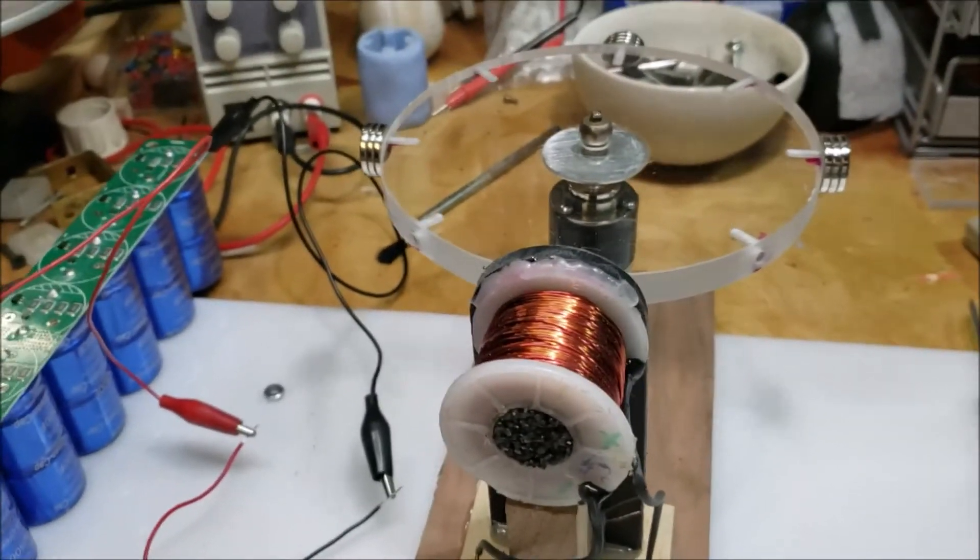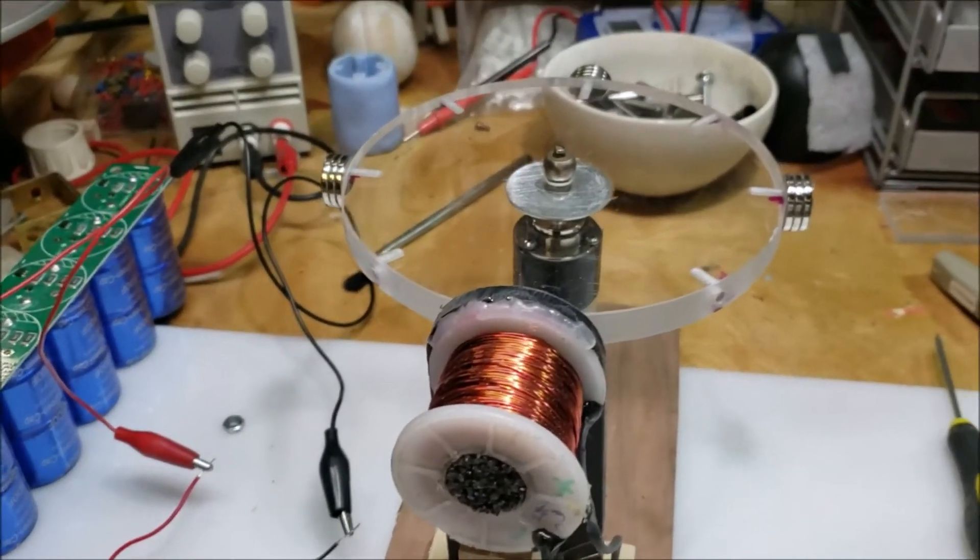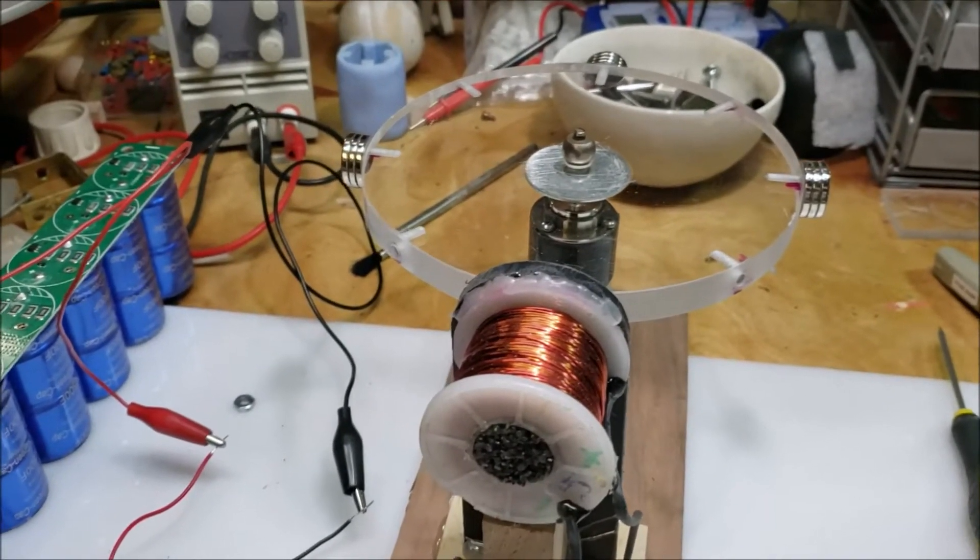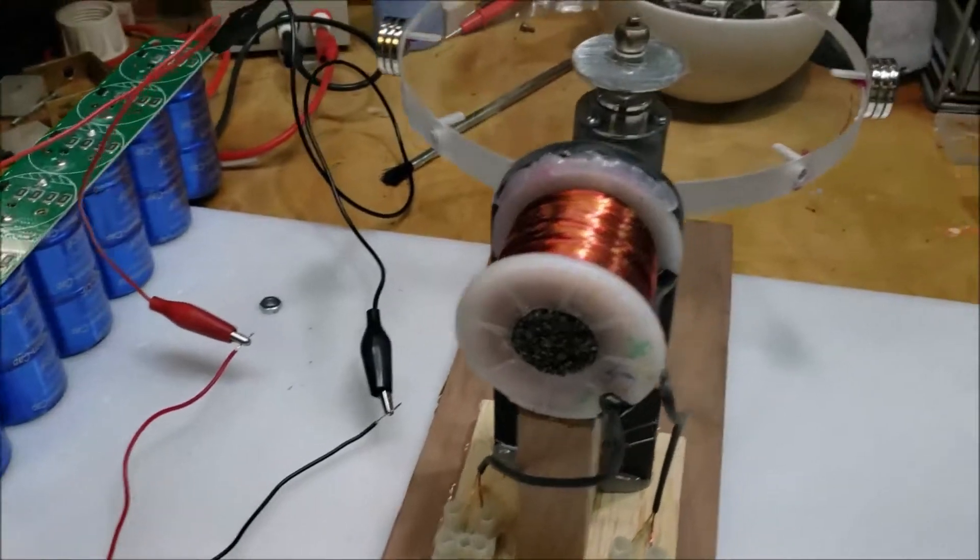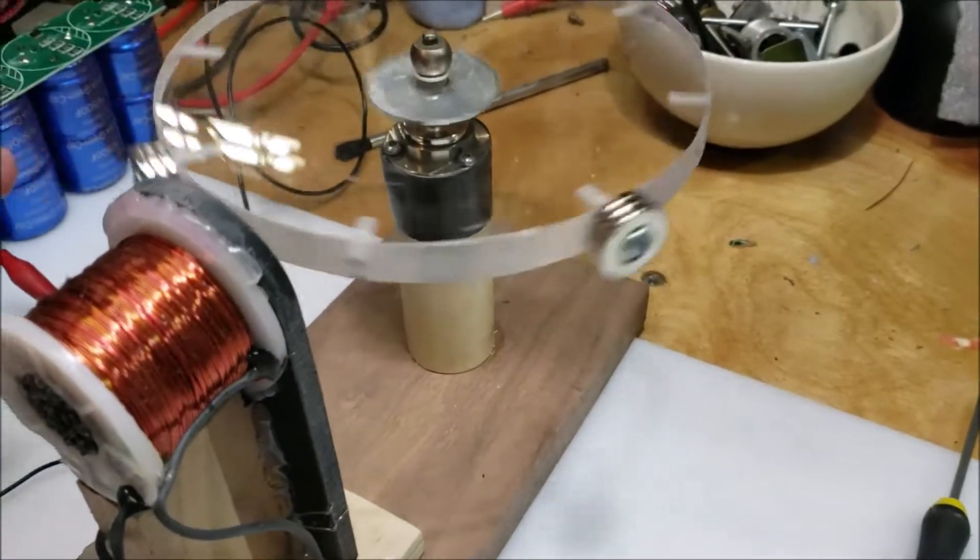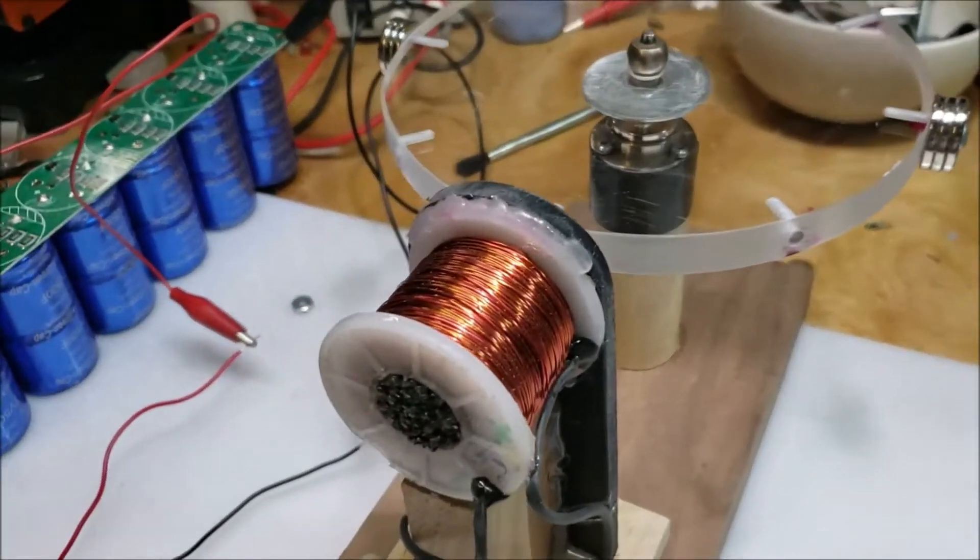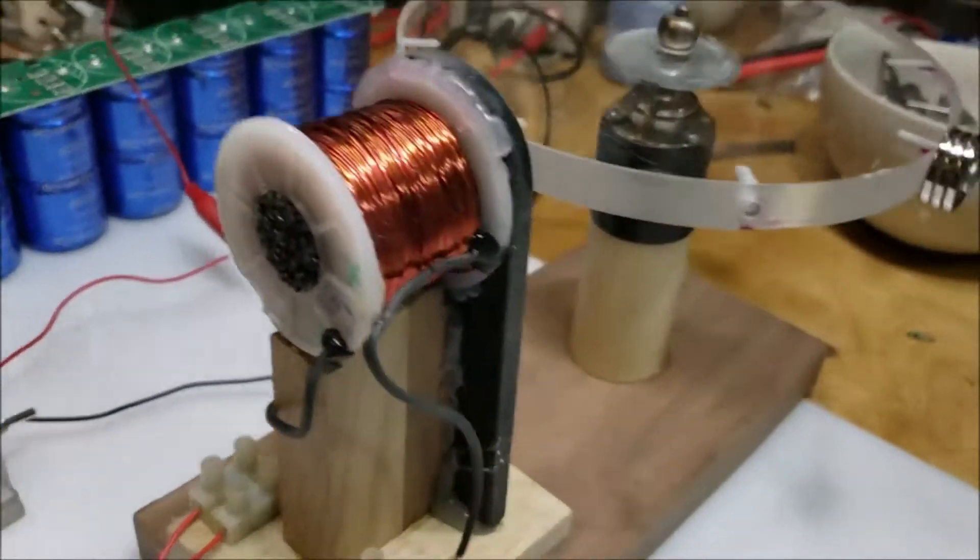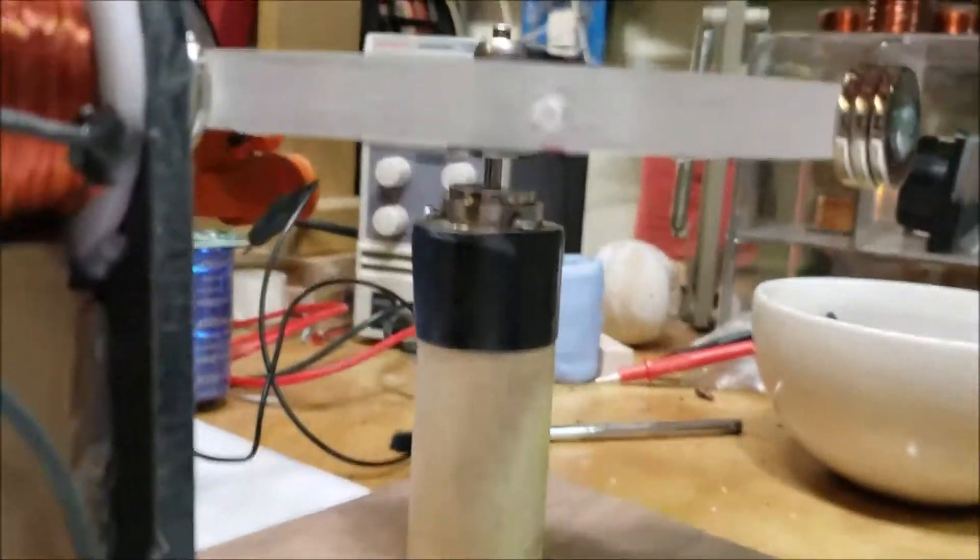I was bored because I'm still waiting for some parts to build the maglev. So I took this rotor, which has been a failed rotor for the longest time. I think it was because I had too many magnets on it. But I turned it into a kind of maglev.